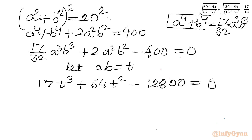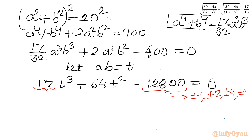Now I will solve using the rational root theorem and synthetic division method. So I need to know what will be the eligible factors of the constant and leading coefficient. So I can write plus minus 1, plus minus 2, plus minus 4, plus minus 8, and so on. And leading coefficient factors: plus minus 1 and plus minus 17. One will satisfy — no it won't, as 12,800 is a big number.